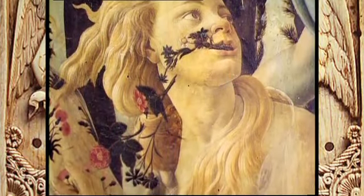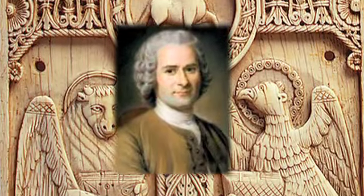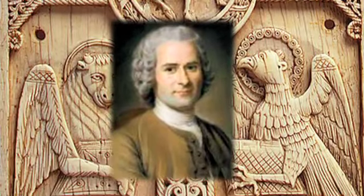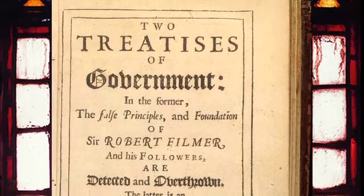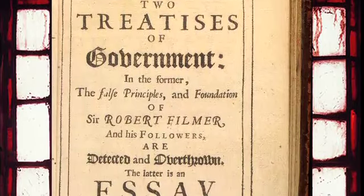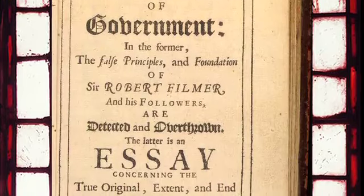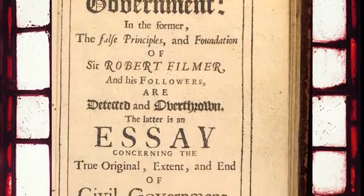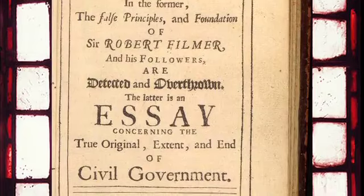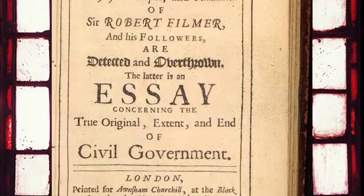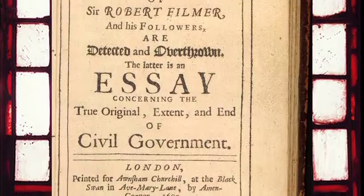It was not until the 17th and 18th centuries when writings by philosophers like John Locke and Jean-Jacques Rousseau influenced the modern forms of democracy. In 1690, John Locke wrote a book called Two Treatises of Government, in which the people and the government formed a social contract, and the government's job was to protect natural rights, which included the right to life, liberty and the ownership of property.